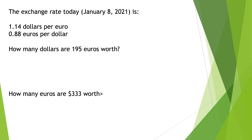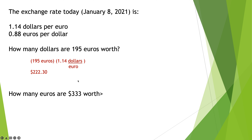How many dollars are 195 euros worth? You've got 195 euros and it's $1.14 per euro. We put that conversion factor in because the euros will cancel out, and that leaves me with $220.30.